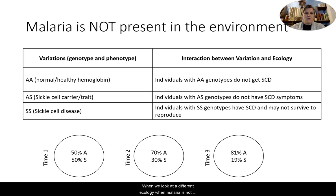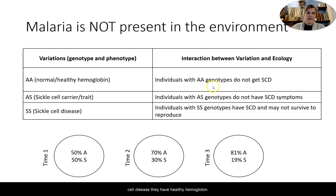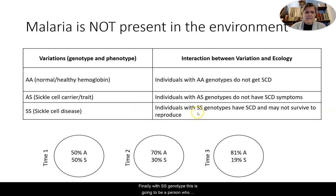When we look at a different ecology — when malaria is not present — we have the same three variations, and the interactions differ slightly. With AA, the person does not get sickle cell disease and has healthy hemoglobin. The person with AS does not generally exhibit symptoms of sickle cell disease — they have sickle cell trait — and unless they have low oxygen levels, they generally won't have symptoms. With SS genotype, this person does have sickle cell disease and without treatment may not survive to reproduce.